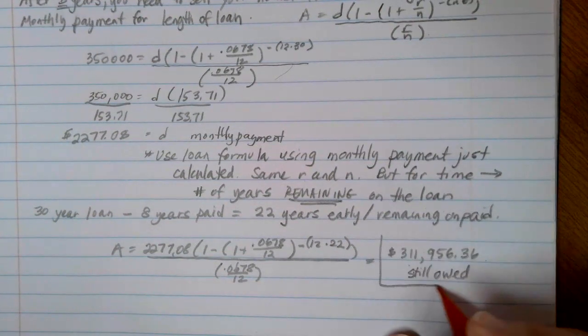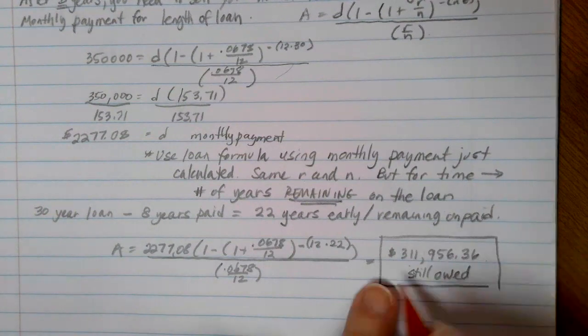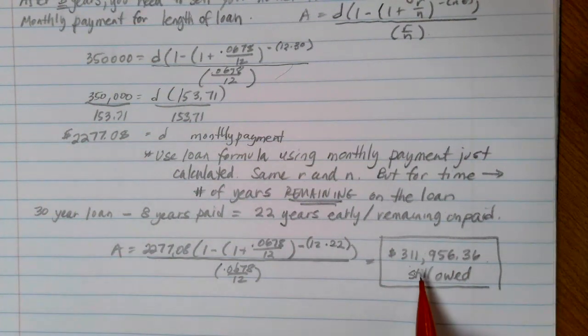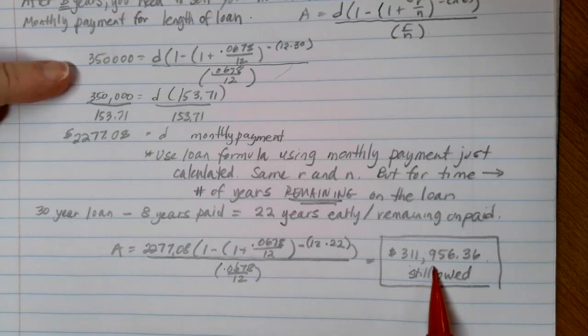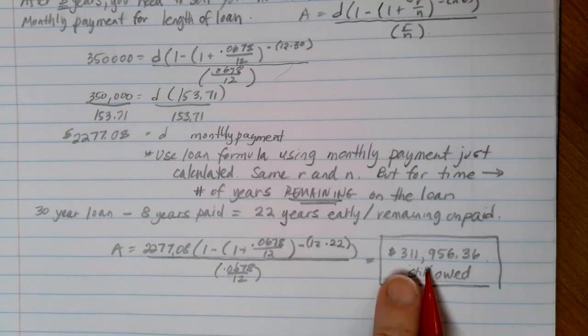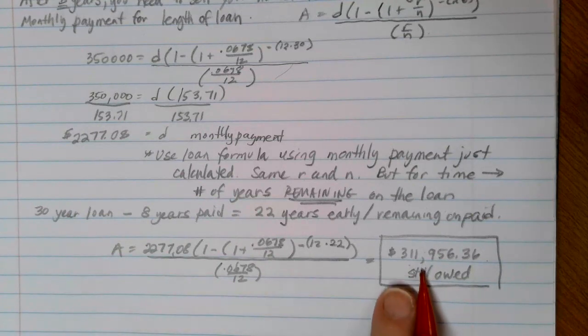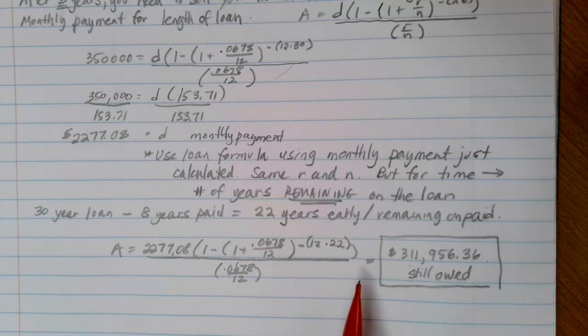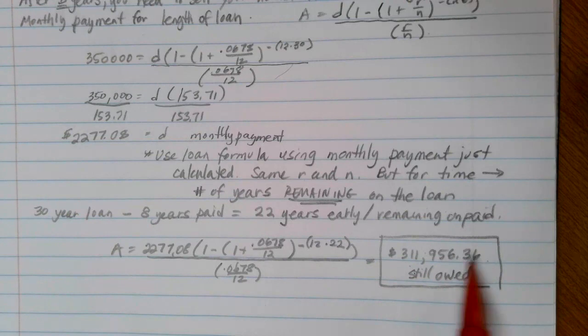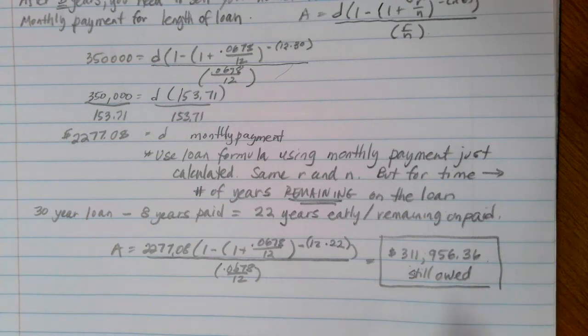So if I want to sell the house, I need to come up with this much money to finish paying off the loan with the bank. Keep in mind, we started with borrowing $350,000. And almost a third of the way through the loan, we've only paid off about $40,000. This is a really good illustration of how we end up paying a lot. The bulk of the interest is up front in our payments. And then as we go closer and closer to the end of the loan, more of our money is going towards paying down the loan instead of the interest payments because the balance is lower.